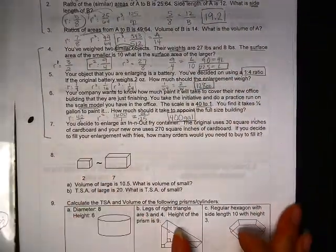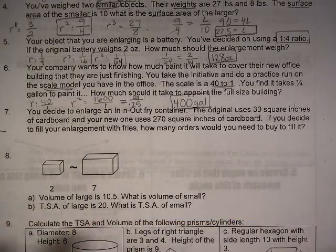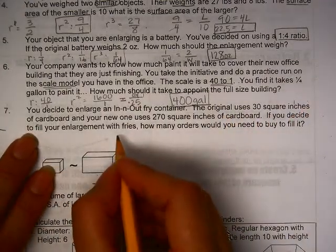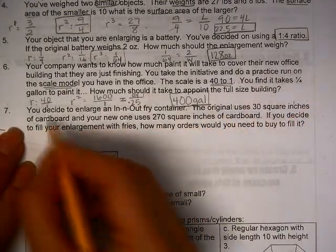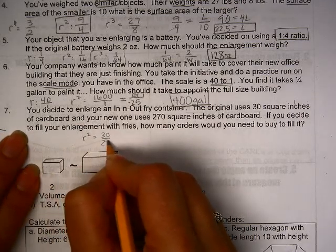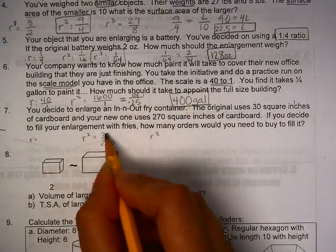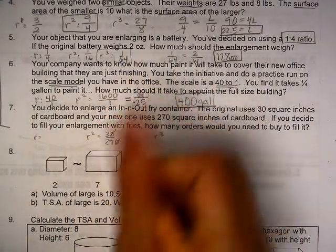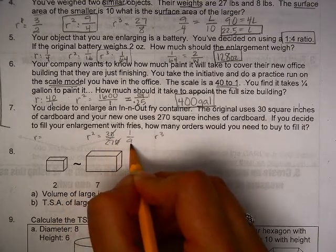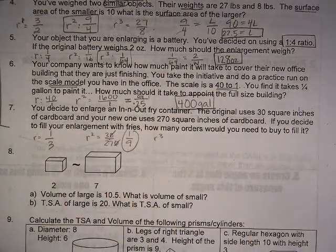All right, number 7. So we are enlarging an In-N-Out fry container, meaning we're doing it in similarity ratios. The original uses square inches of cardboard, so that is R squared, people. So we are talking 30 is to 270, which means I need R and R cubed. So I do want to reduce this. Square rooting 30 is icky and yuck, but if I reduce by the tens and then reduce again, I get 1 ninth, and square rooting that is superbly easy to do.